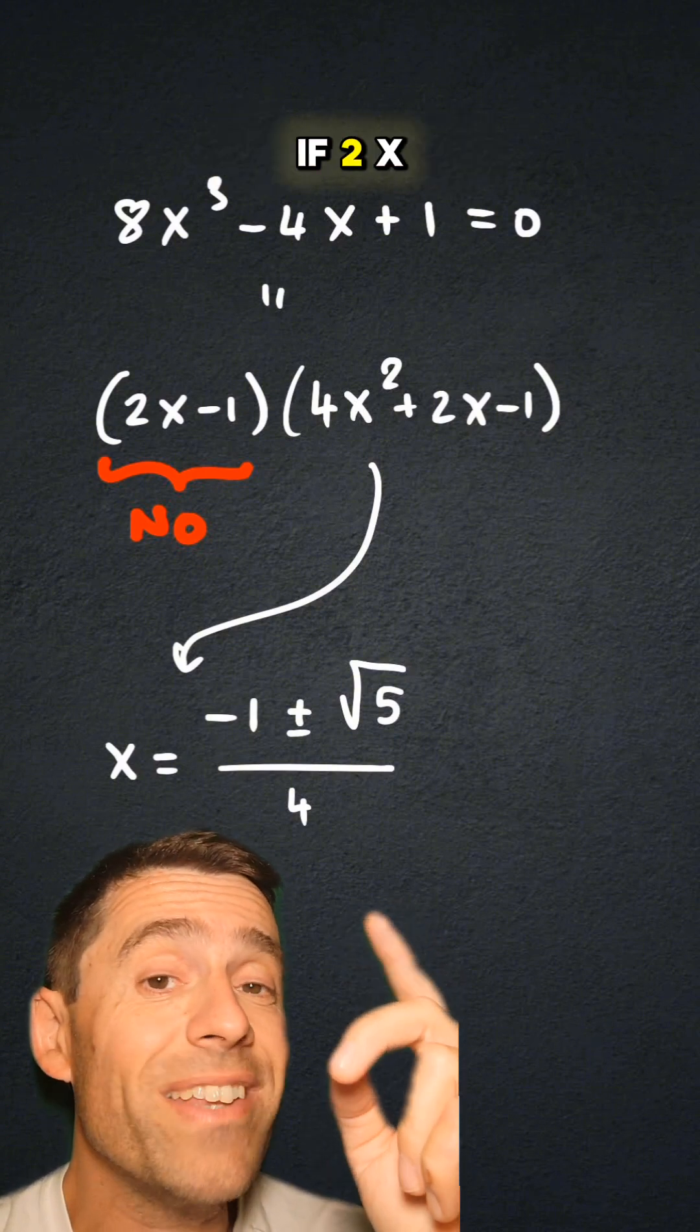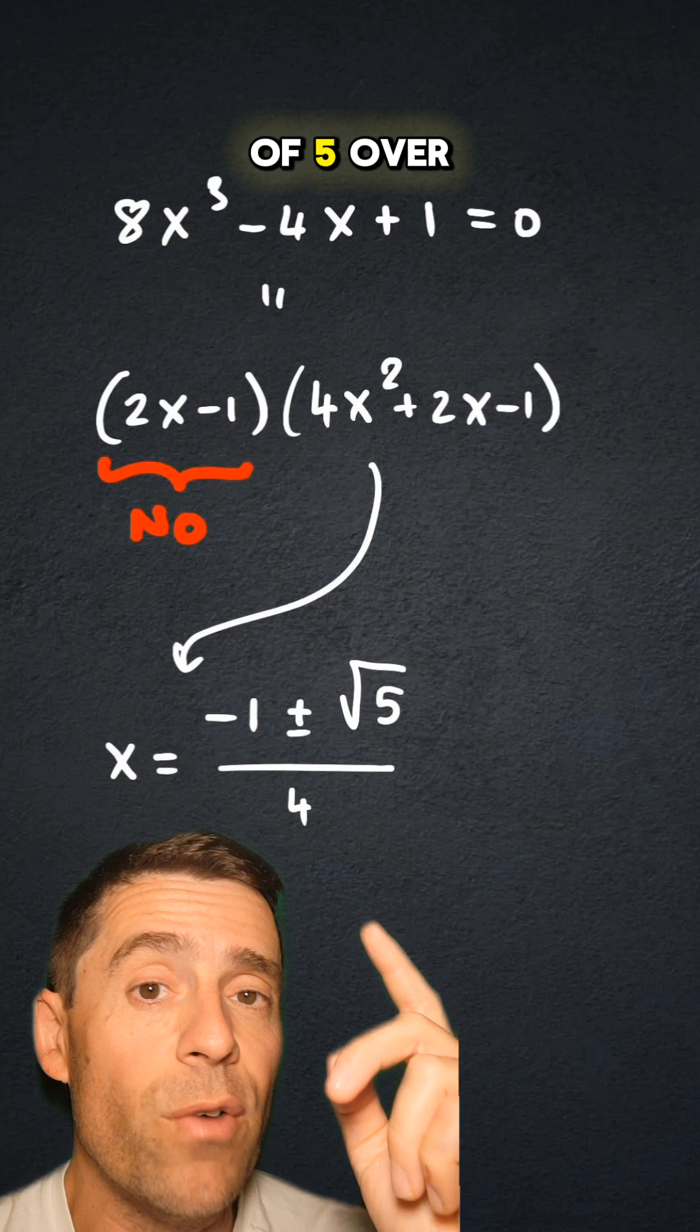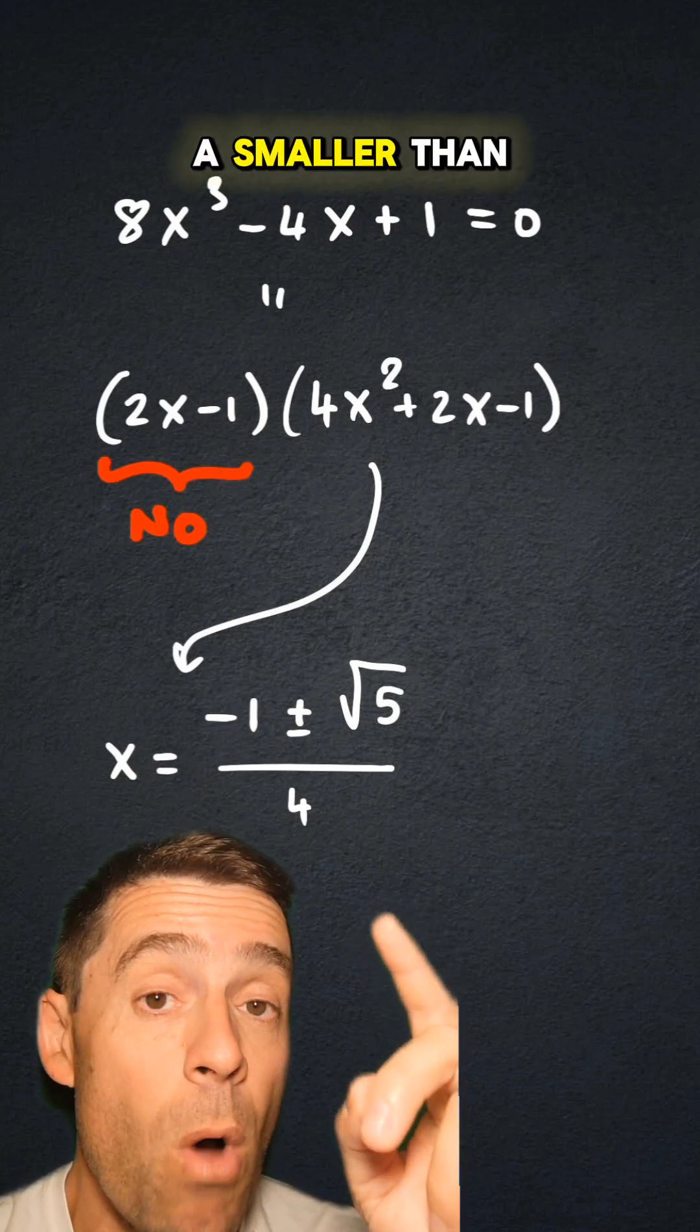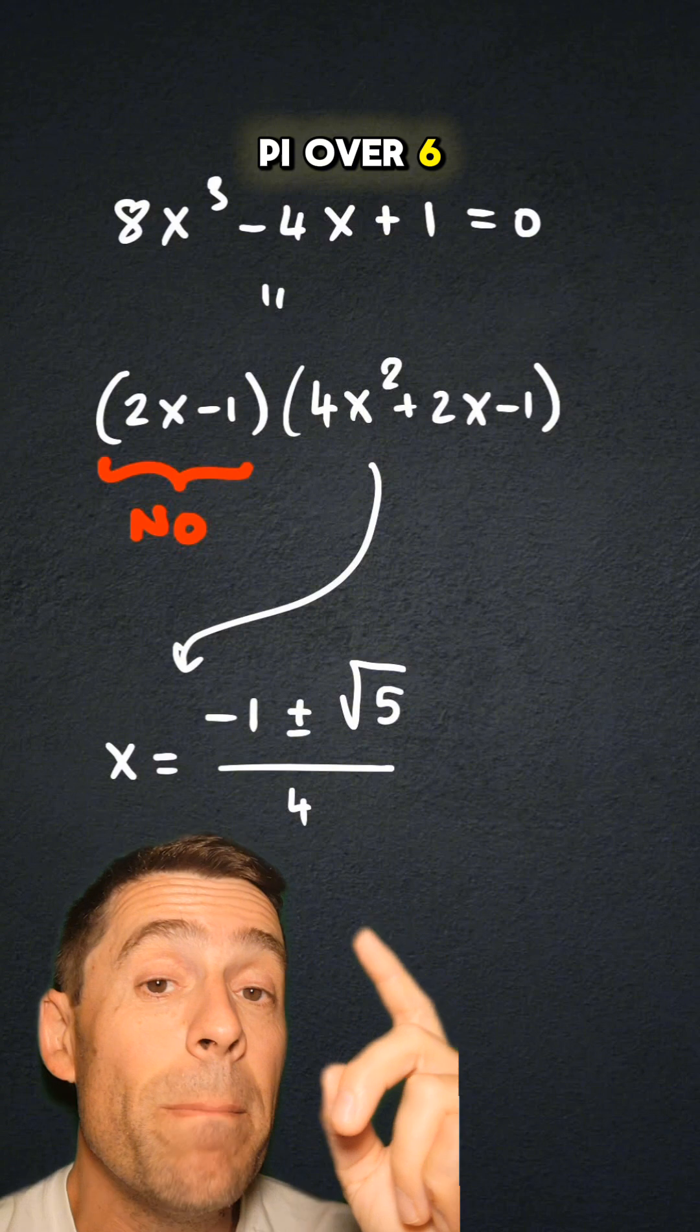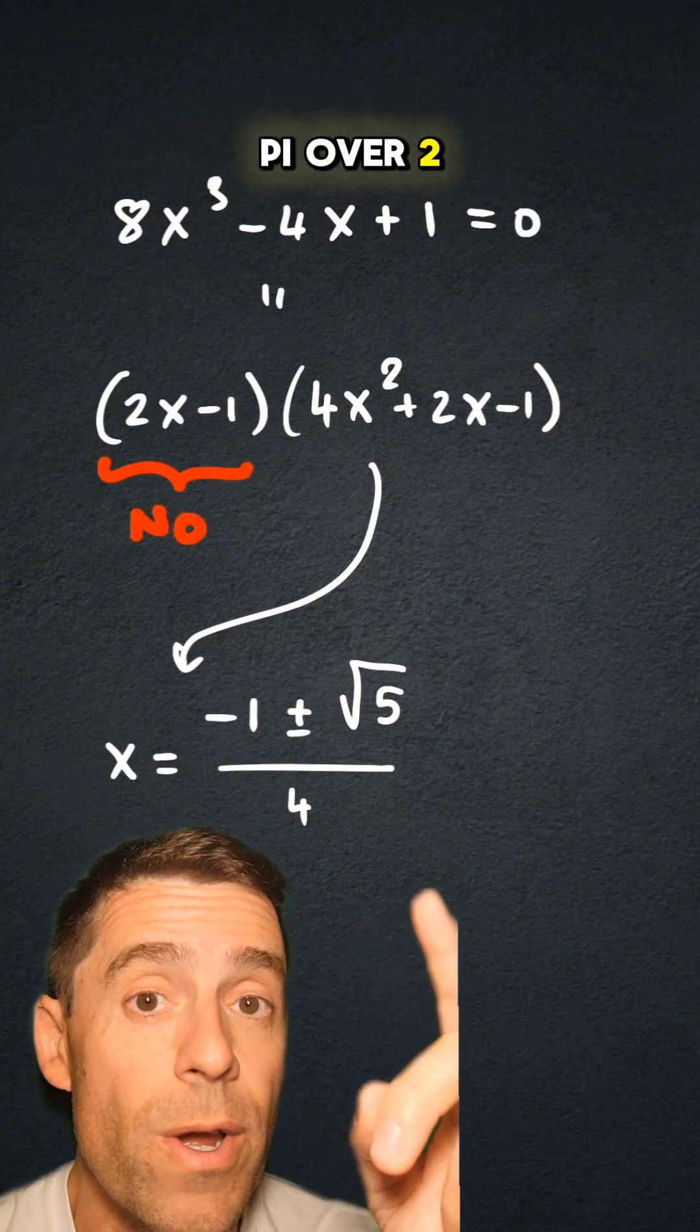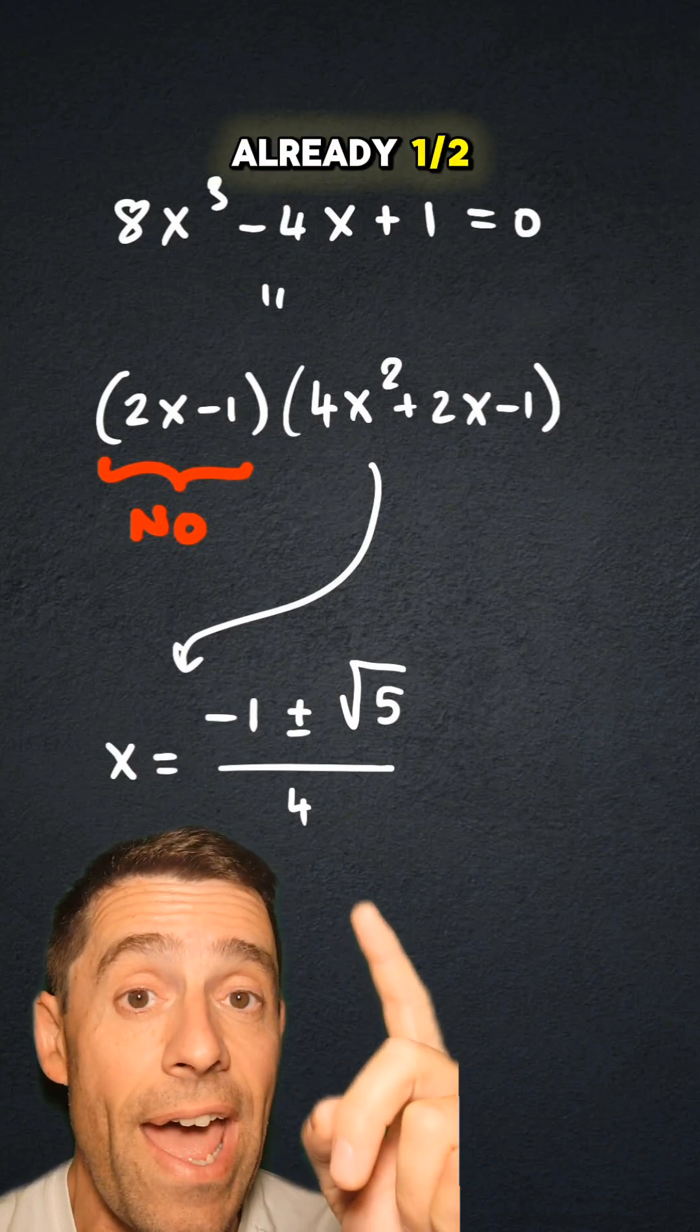Now, one of the two has to be 0. If 2x minus 1 was 0, x would be a half, which is the sine of π/6. But the sine of π/10 has to be smaller than the sine of π/6, because the sine function is increasing between 0 and π/2. So it cannot be that the sine of π/10 is already a half.